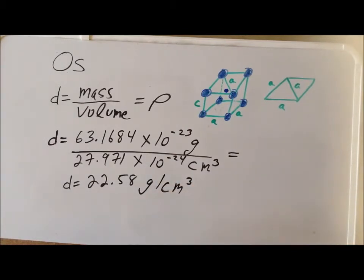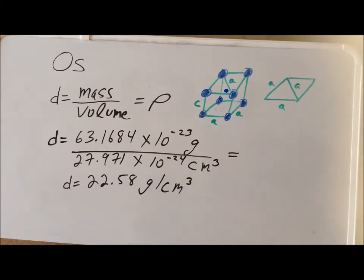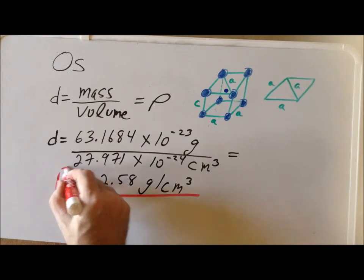As always, whenever we do any computation, we need to do a reasonableness check on the result. One of the nice features of using grams per cubic centimeter is that we can refer it to the density of water, which is 1 gram per cubic centimeter. The range of reasonable values for metals on Earth runs from about 0.5 grams per cubic centimeter for the lightest alkali metals up to about 22 grams per cubic centimeter. In fact, the highest density of any metal is osmium itself at 22.58 grams per cubic centimeter, confirming that our calculated density is correct.